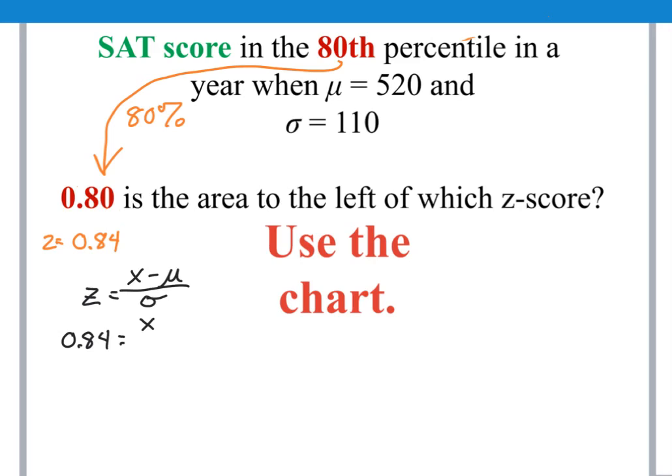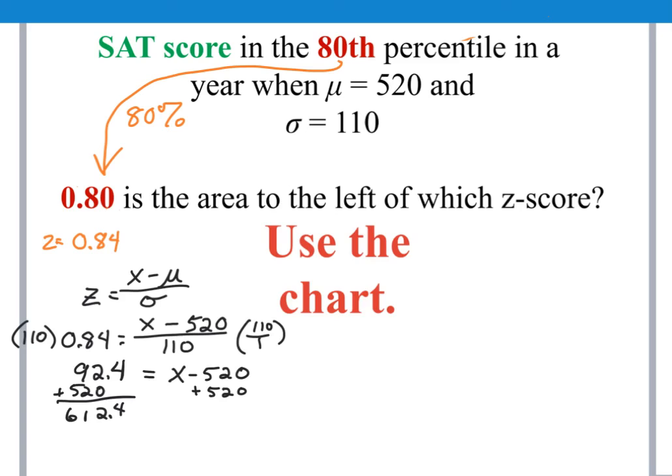And do we have the value of the SAT score that gives us that z-score? No, that's what we're looking for. But we do have the mean, it's written in the original problem, of 520, and we have a standard deviation of 110. If we multiply both sides by 110, we have to multiply both sides, because as you do unto one side, you must do unto the other, the golden rule of algebra. That will give us x minus 520 on the right-hand side, and 92.4 on the left-hand side. Almost done, not quite. We have to isolate that x to find the score. So if we add 520 to both sides, x equals 612.4.